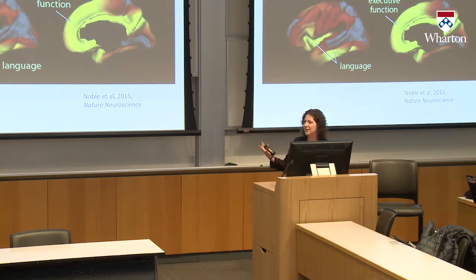Certain areas showed particularly strong relationships, shown in yellow — areas like the inferior frontal gyrus and parts of the temporal lobe important for language, as well as the anterior cingulate cortex important for executive functioning. The areas with the greatest socioeconomic disparities in brain structure are precisely the regions supporting the cognitive skills where we previously found the largest differences. This relationship between family income and cortical surface area wasn't linear — it was strongest among the most disadvantaged families, meaning dollar for dollar, small increases in income were associated with proportionately greater differences in brain structure among the poorest children.